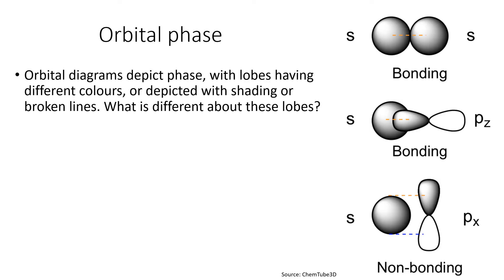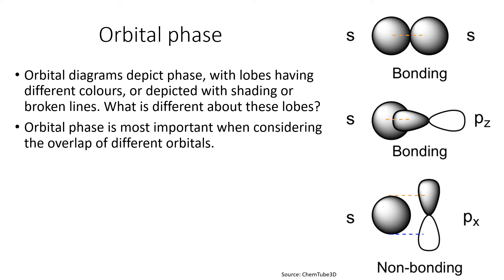Taking the wave picture further, we get onto the idea of orbital phase. The diagrams show lobes of orbitals shaded darker or white, reflecting the so-called orbital phase. Phase is to do with the sign of the wave function. When the function has a positive value of y on an xy graph, we call it a positive phase; when it's a negative value below the x-axis, we call it negative phase. In terms of a wave, positive phase corresponds to the crest of a wave, and negative phase corresponds to a trough.